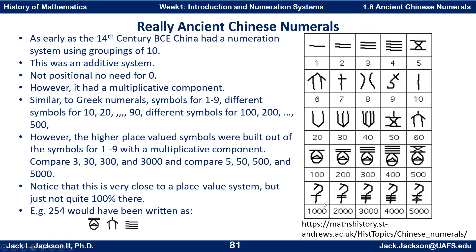For 1,000, they have a symbol, and one slash through it multiplied by one makes 1,000. Two of those would be 2,000, 3,000, 4,000. 5,000 takes the symbol for five and places it right inside there. So we have a multiplicative situation inside there.